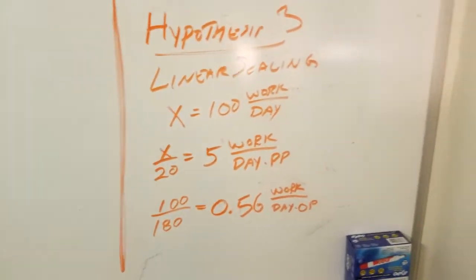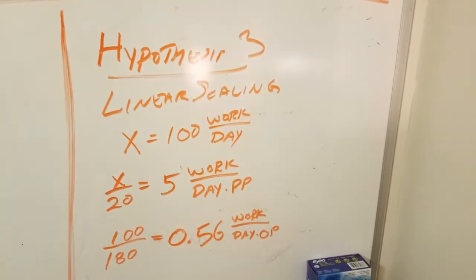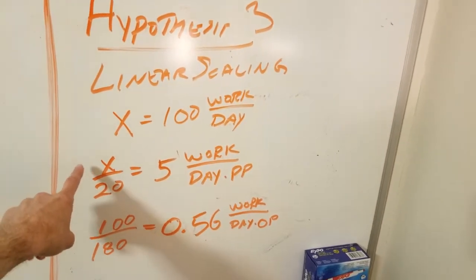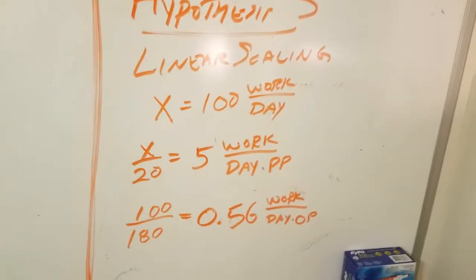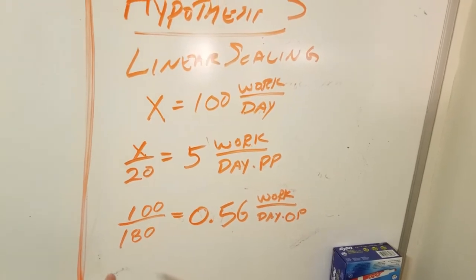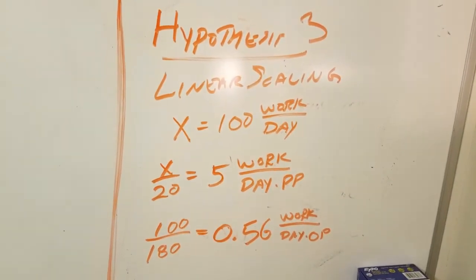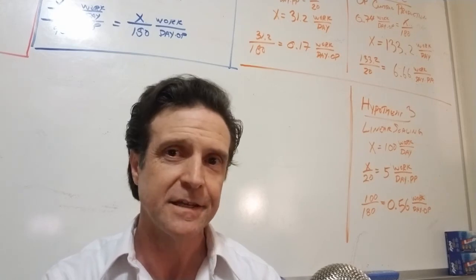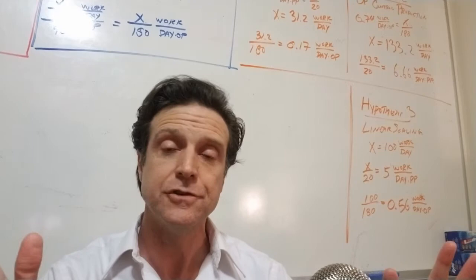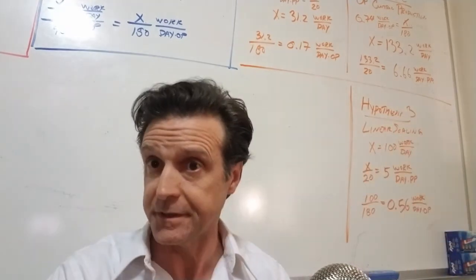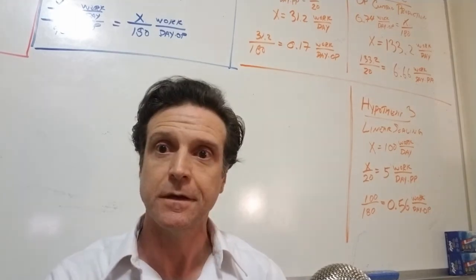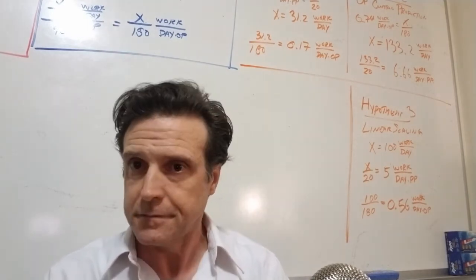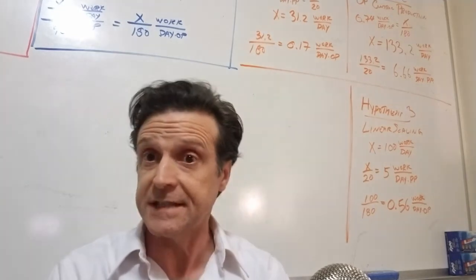Lastly, we can make the assumption of linear scaling. Let's say that X is 100 work per day because we increased the number of employees by one order of magnitude. Then that means the productive people are doing X over 20 or 5 work per day per productive person, and the other people are doing 100 per 180 or 0.56 work per day per other person. The implications of this first is that there's actually a fairly wide range of possible outcomes as we see the company scale, depending on where the limits are to productivity. As you increase employees, they're actually going to be facilitating the more creative elements.